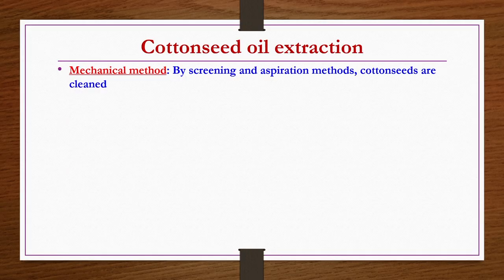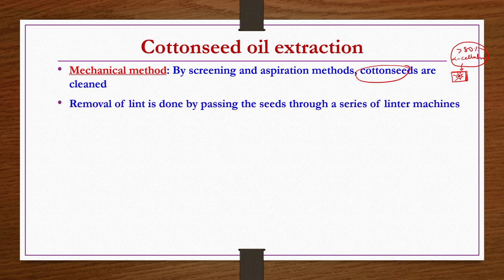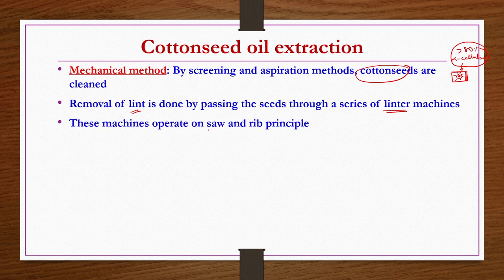In the mechanical method, cleaning of cotton seeds is done by screening and aspiration. Cotton seeds are black in color and may contain hulls and lints. The lints are very rich in alpha cellulose — more than 80 percent — and can be used for other applications. Hulls are also used for different purposes like roughage in animal feed. The removal of lint is done by passing seeds through a series of linter machines working on a saw and rib principle.